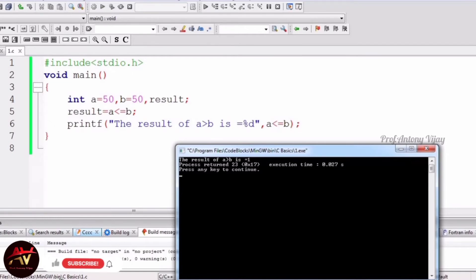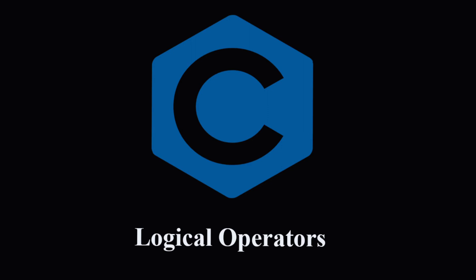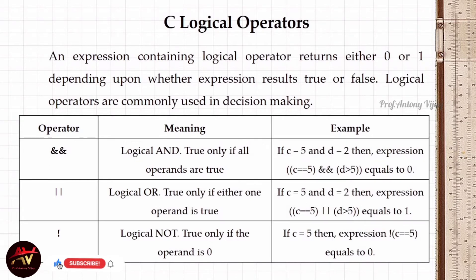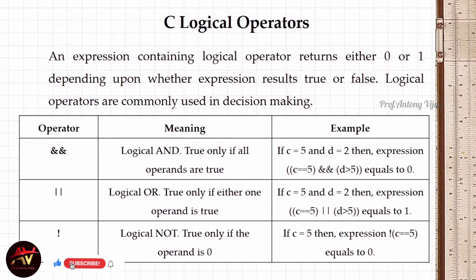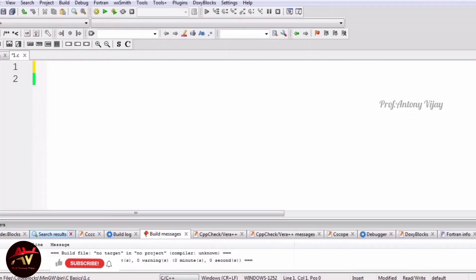Logical operators fully depend on expressions — if the expression is true it gives 1, otherwise 0. There are three logical operators: logical AND, logical OR, and logical NOT. For logical AND, both conditions must be true for the result to be true, otherwise it is 0. For logical OR, either one or both conditions must be true. Logical NOT inverts the condition — true becomes false and false becomes true.